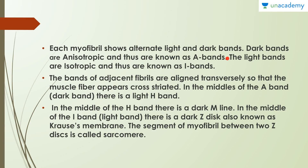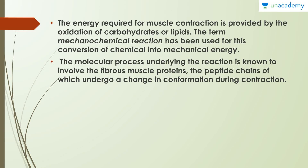Each myofibril shows alternate light and dark bands. The dark bands are anisotropic and are referred to as A bands, while the light bands are isotropic and known as I bands. The bands of adjacent fibrils are aligned transversely, so the muscle fiber appears cross-striated. In the middle of the A band there is a light H band, and in the middle of the H band is a dark M line. In the middle of the I band there is a dark Z disc, also known as Krause's membrane. A segment of the myofibril between two Z discs is known as a sarcomere, which is the simplest component that takes part in muscle contraction.